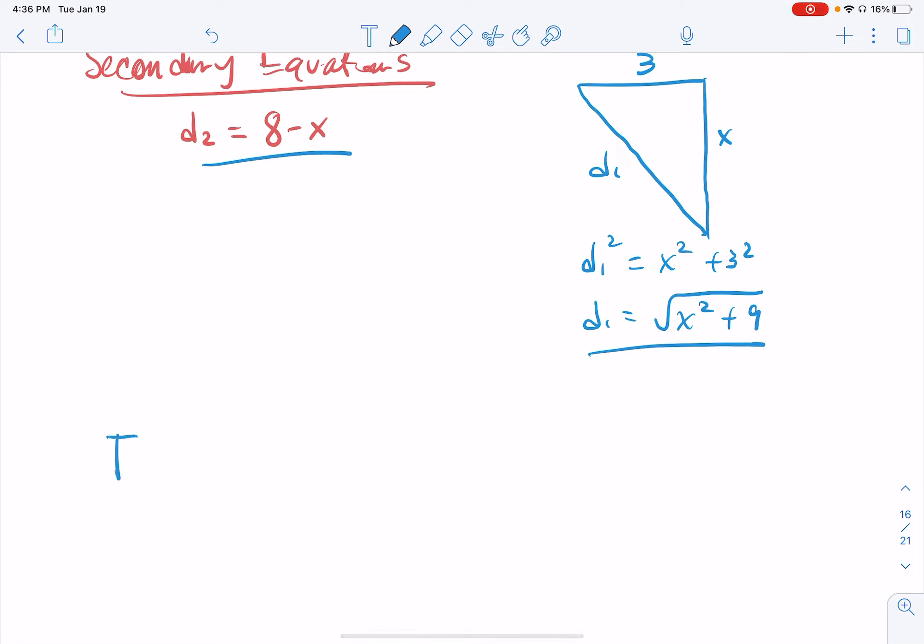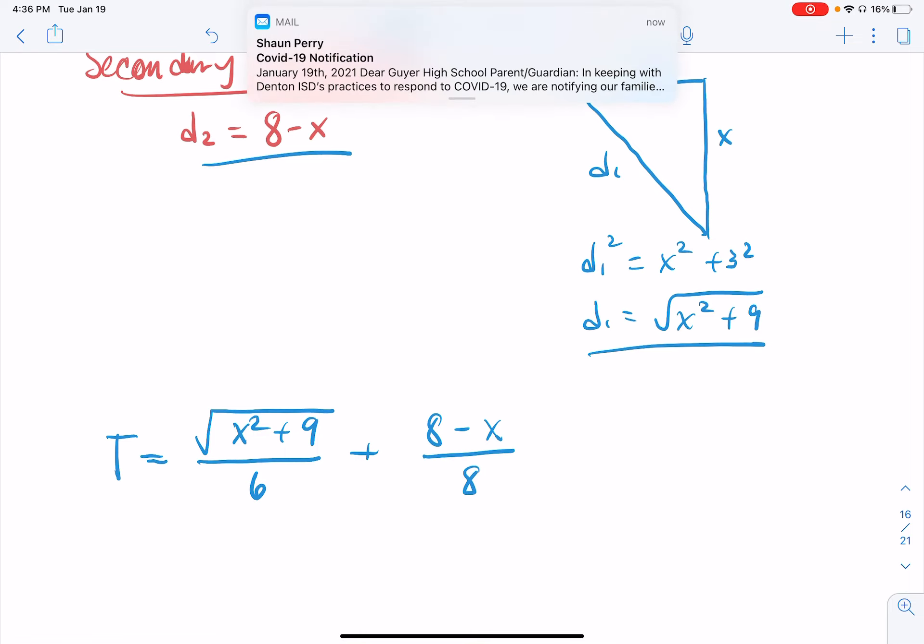So we've got time is equal to the square root of X squared plus 9. There's our first distance divided by our rowing rate, distance divided by our rate, plus 8 minus X. There's our running distance divided by our running rate of 8. There we go. We have our equation.